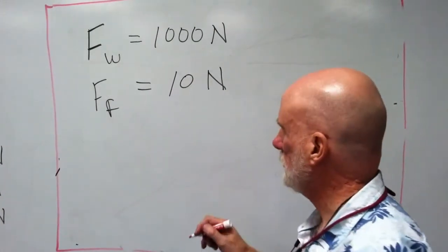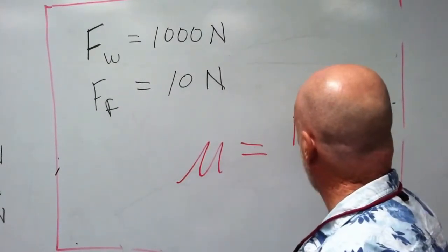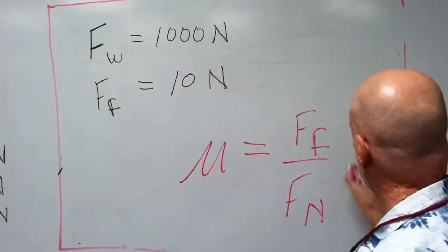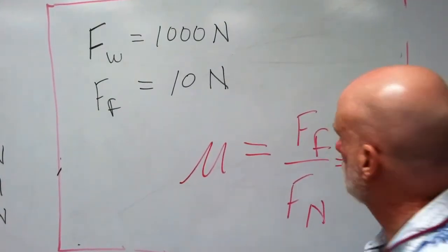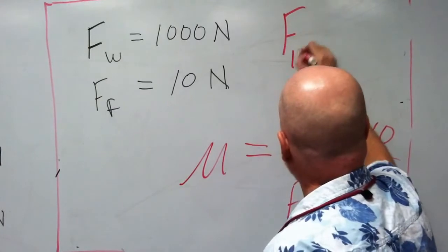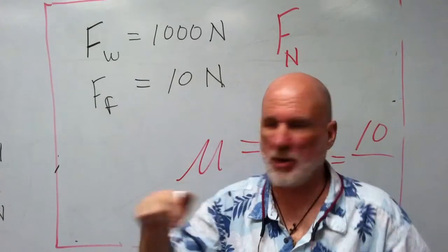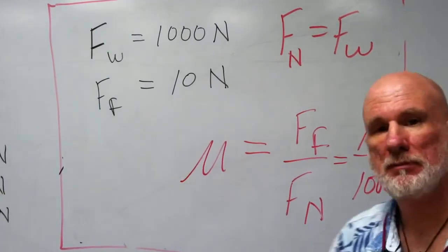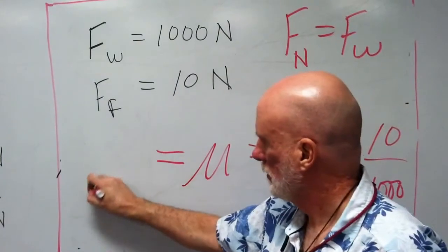The coefficient of friction is that ratio, so that's going to be 10 newtons over the normal force. On a horizontal surface, the normal equals the weight, so it's 10 over 1000 — that's 0.01. Very slippery.